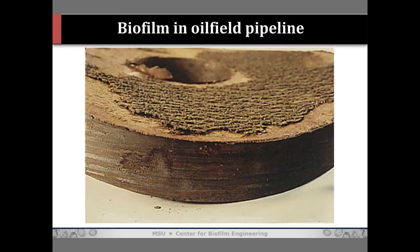Here's a cutaway view of an oil field pipeline. That crusty deposit on the inside of this pipe is a mixture of biofilm and corrosion products — abiotic materials trapped in the sticky matrix of the biofilm. They use a lot of biocides in the oil patch to control problems associated with fouling, corrosion, souring, the generation of hydrogen sulfide — and they're all microbial biofilm phenomena.